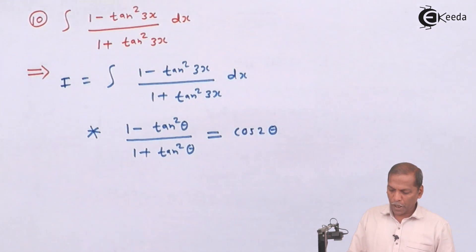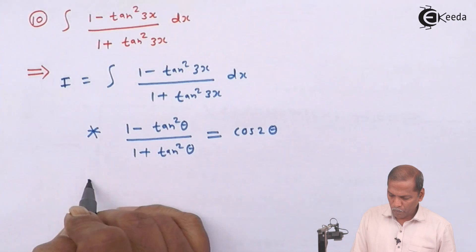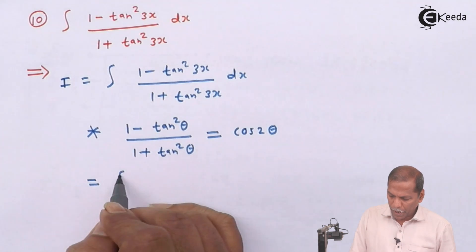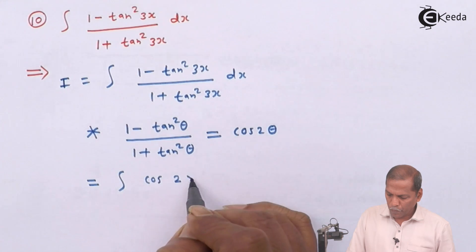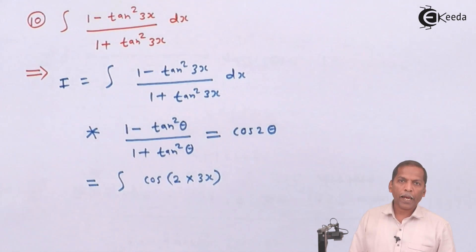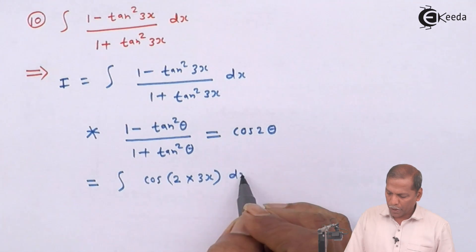So in present case, your theta represents the value 3x. So in this formula, we put theta equal to 3x. So the next step will be integral cos of 2 into 3x bracket complete into dx.